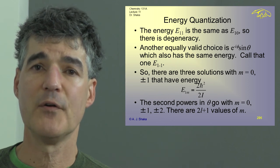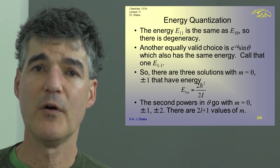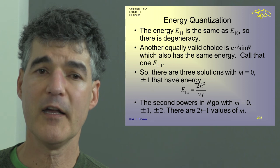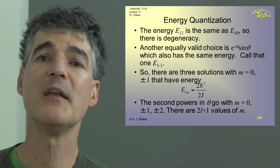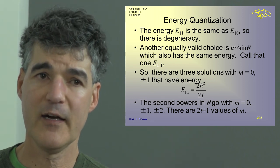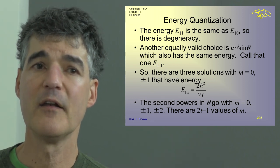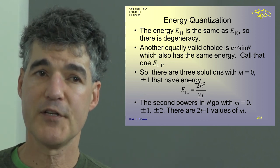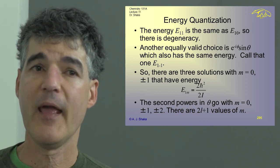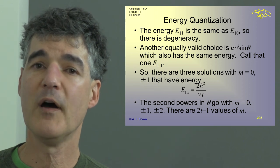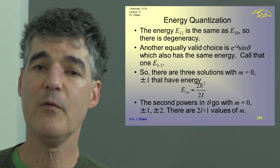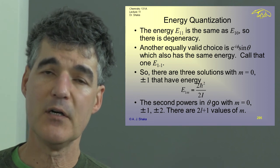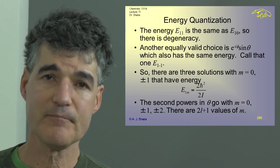In this case, we could imagine that we're just swapping around whether we have the z component of the angular momentum or the x or y component. They would have the same energy but would just be rotating about a different axis classically at the same rate. Another equally valid choice — which won't surprise you if you can pick e to the i phi — is that you can pick e to the minus i phi times sine theta, which also has the same energy, and we call that E(1,-1).